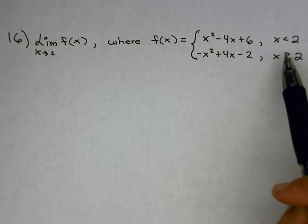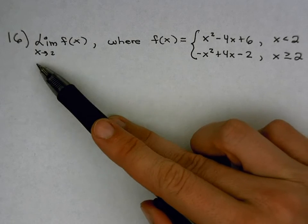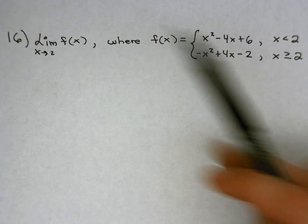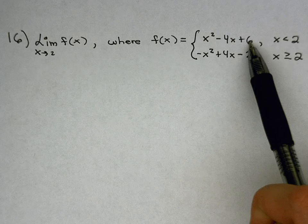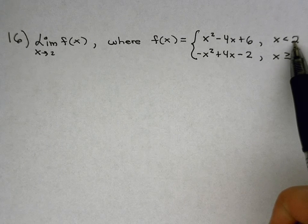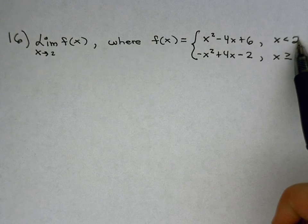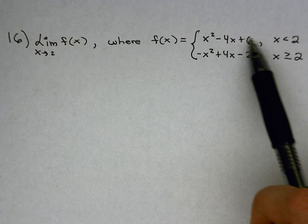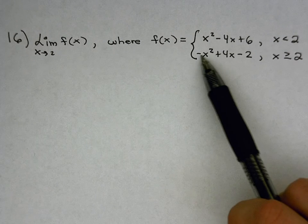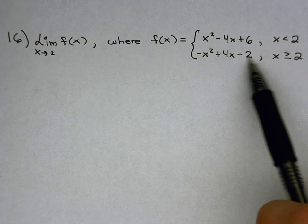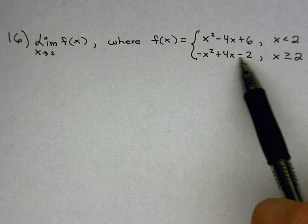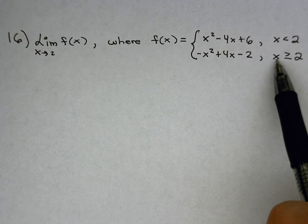This would be different if we were asked to find the limit as x approaches, say, 5. This top function only deals with values less than 2. 5 is not less than 2, so I wouldn't even need to consider this function. This function would be the only one I would need to consider to plug into, factor that sort of thing if necessary, because 5 is greater than 2.